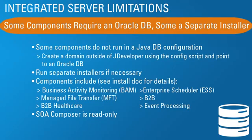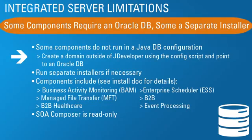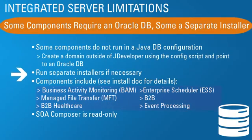Here are the limitations. The integrated server in this default configuration uses Java DB and not an Oracle DB, and some components don't run in Java DB. In that case, you would create a domain outside of JDeveloper and point it to an Oracle database. There are also some separate installers not included in this package by default. Components that have issues with Java DB or have a separate installer include: Business Activity Monitoring, Enterprise Scheduler, Managed File Transfer, B2B, B2B Healthcare, and Event Processing. Some of these are SOA components, but you may encounter them in your BPM development.